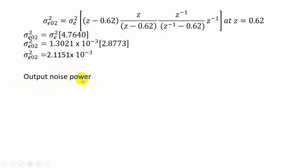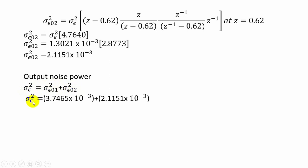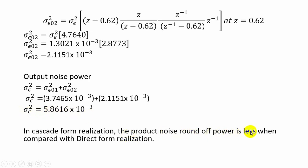The total output noise power for cascade form = noise power due to e1(n) + noise power due to e2(n) = 3.7465 × 10⁻³ + 2.1151 × 10⁻³ = 5.8616 × 10⁻³. Comparing the two: direct form realization gives ~7 × 10⁻³ and cascade form gives ~5 × 10⁻³. Therefore, the product round-off noise power is less in cascade form realization compared to direct form realization.